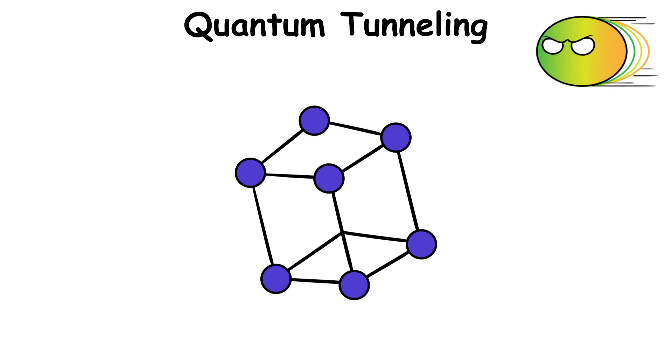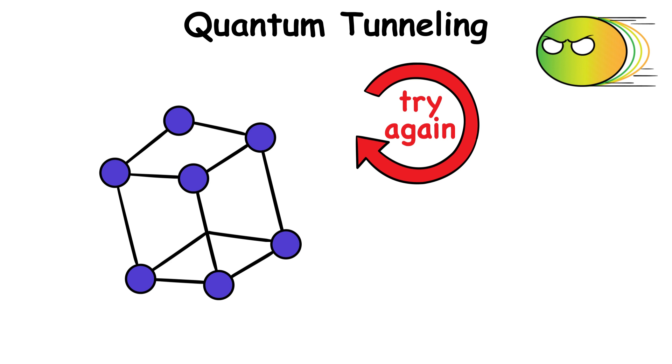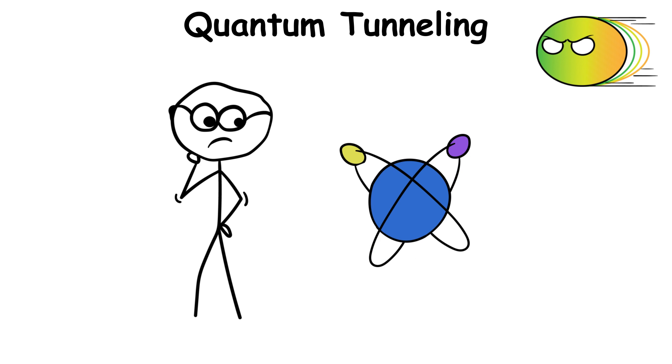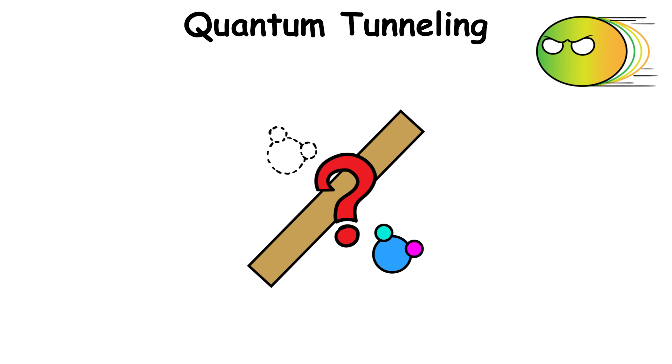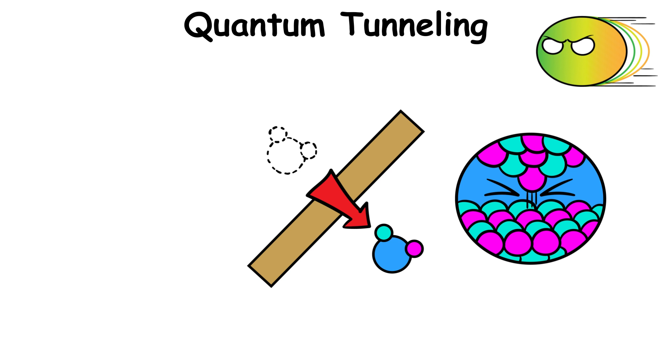Quantum tunneling. In the quantum world, particles can do something impossible, pass through impenetrable barriers. Classical physics says this is impossible, because one particle can only occupy one space at a time. How does a particle pass through a barrier if that's the case? That's the principle of quantum tunneling.